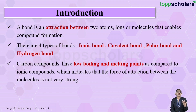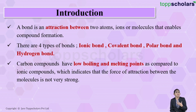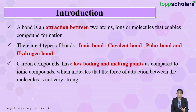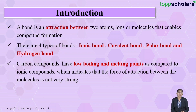Covalent bonding is simply a bond formed due to the sharing of electrons. Carbon compounds which have covalent bonds have low boiling and low melting points in comparison to the melting and boiling points of ionic compounds.